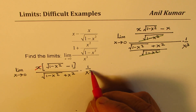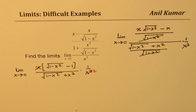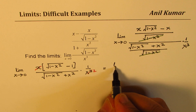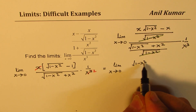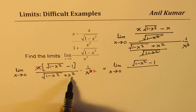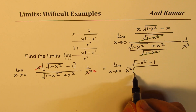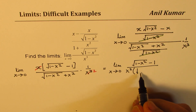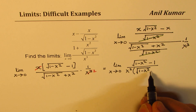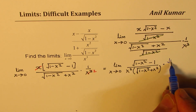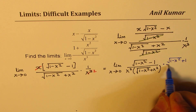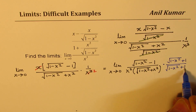We can cancel one x from the numerator with x cubed, leaving x squared in the denominator. So we have the limit as x approaches 0 with numerator square root of 1 minus x squared minus 1, and denominator x squared times the quantity square root of 1 minus x squared plus x squared. At this stage we should rationalize — we multiply and divide by square root of 1 minus x squared plus 1.